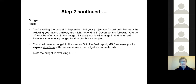Then I work on the budget. If you're writing it in September, your project won't start until February at the earliest and may not finish until December — so it could finish more than 15 months after you did the budget, and costs will likely change. I include a contingency budget to allow for those changes. You don't have to budget to the nearest dollar; in the final report MB requires you to explain significant differences between budget and actual costs. Note that the budget is excluding GST.